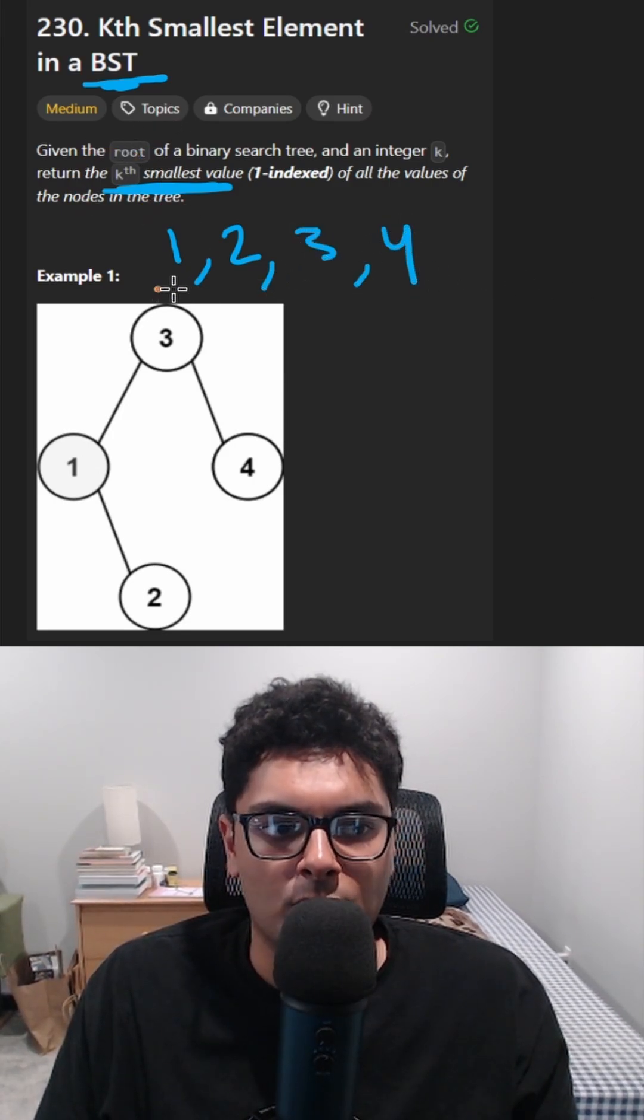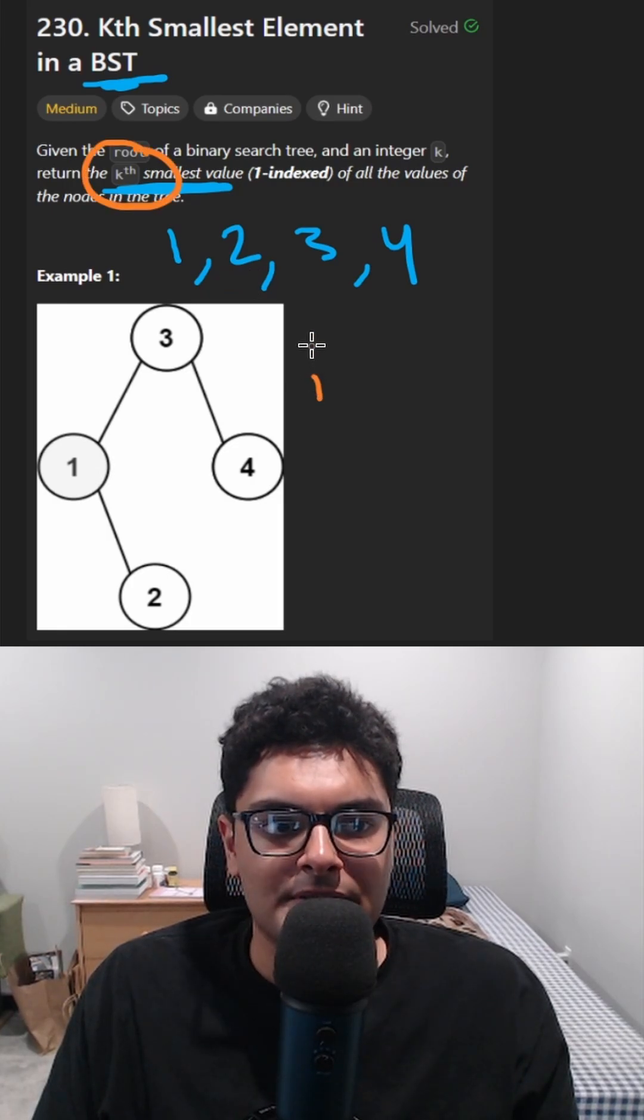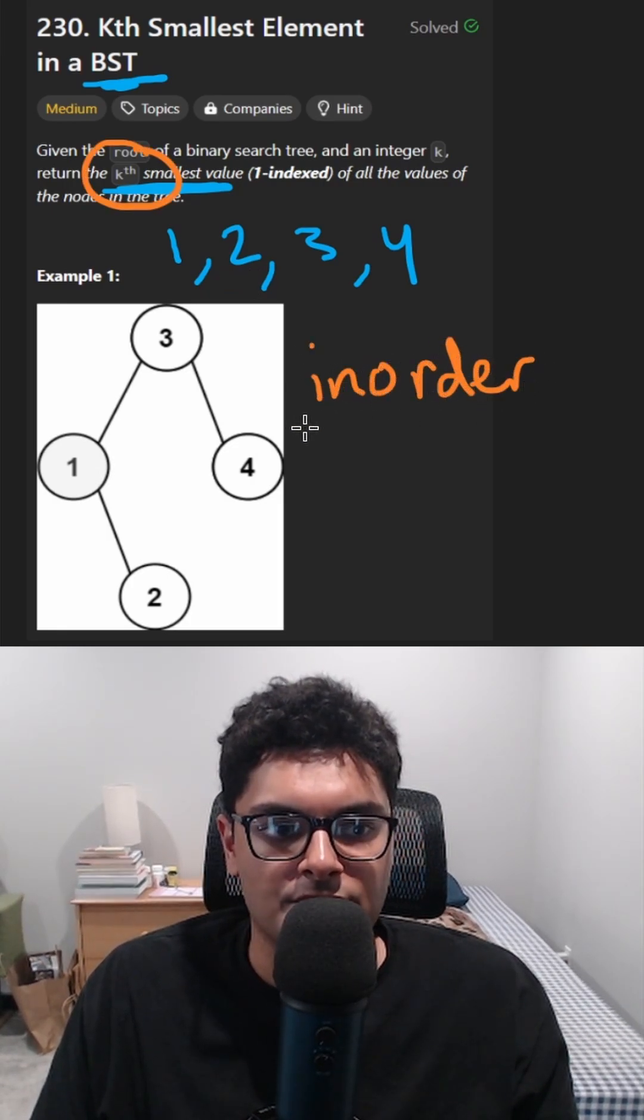If k is one, we want the smallest value. If k is two, we want the second smallest value. That tells me that we probably just need to do an in-order traversal.